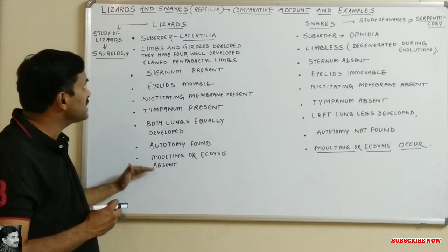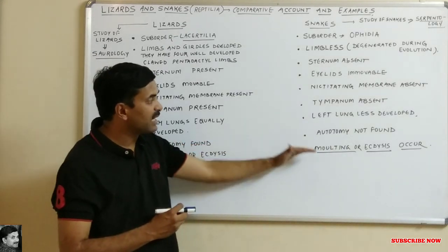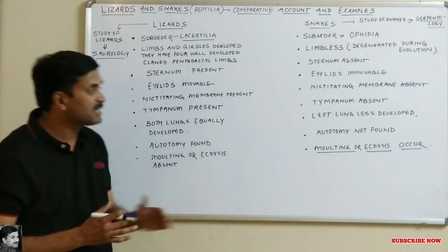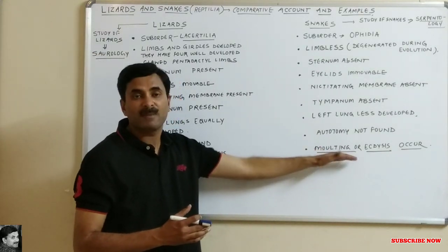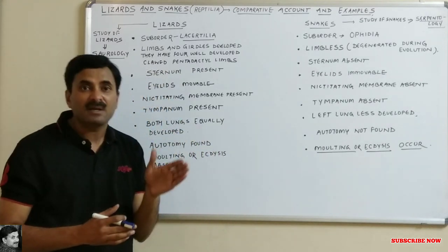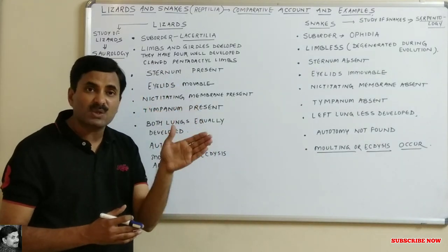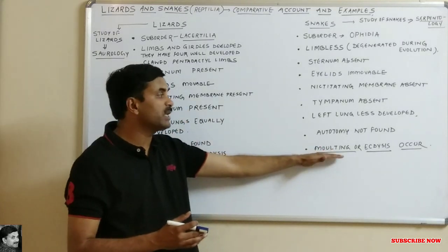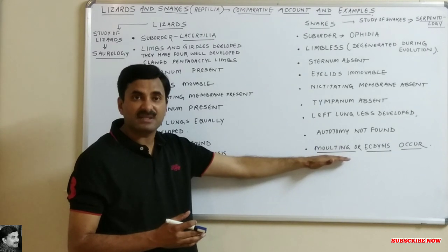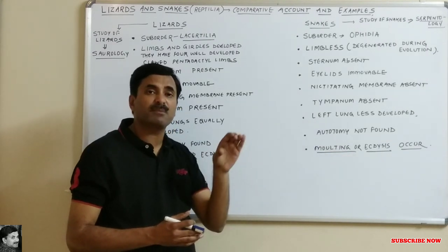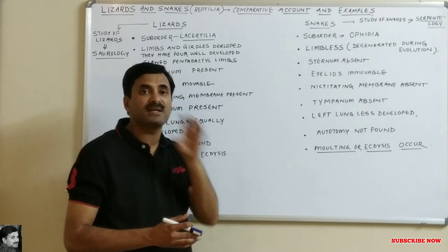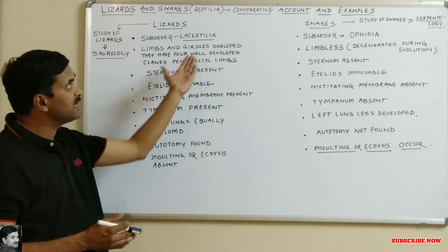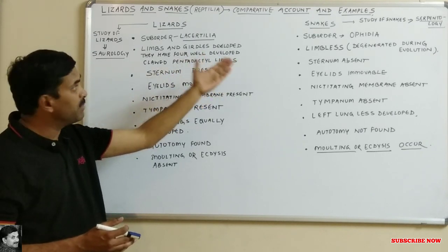The next point is moulting or ecdysis. Moulting or ecdysis is absent in lizards, while snakes show moulting or ecdysis. Moulting or ecdysis means the removal of the epidermis of the skin periodically in a single piece. During the process of moulting, the cornified cells of the skin are removed. This concludes the comparative account of lizards and snakes.